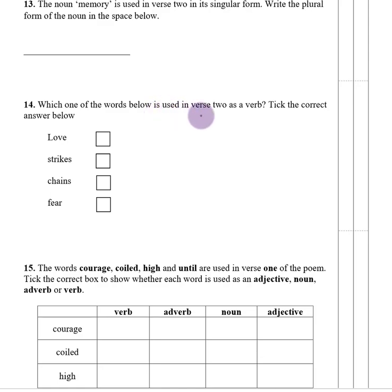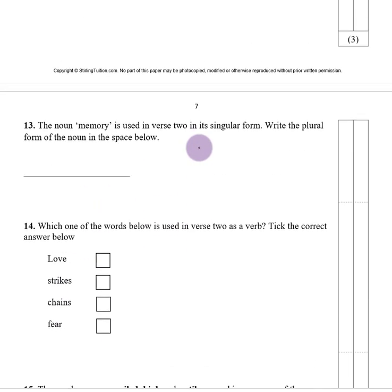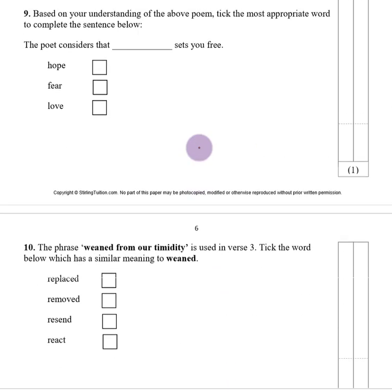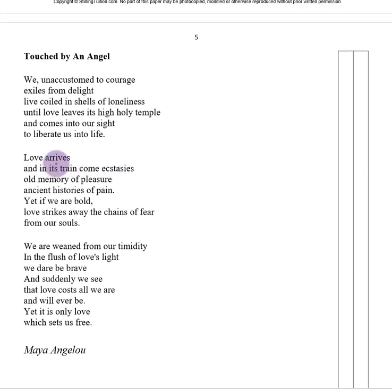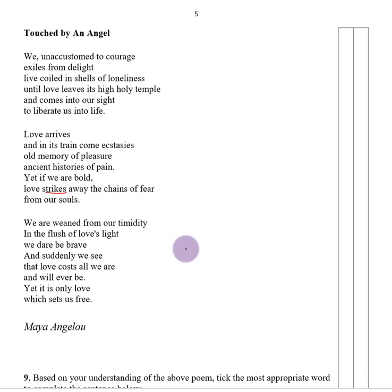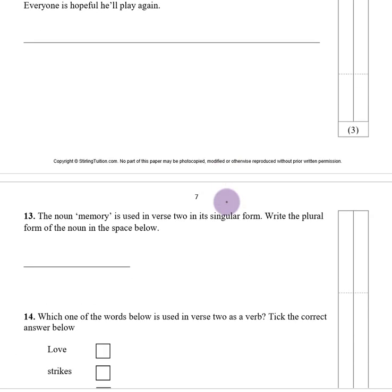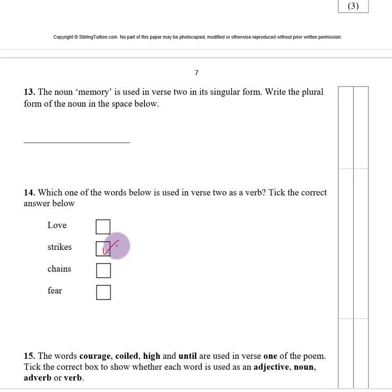Number fourteen. Which word is used in verse two as a verb? The options are love, strikes, chains, and fear. Looking at verse two: 'Love arrives' — love there is a noun. 'Love strikes away the chains of fear.' Strikes is the verb — it is the doing word, something that happens. Chains is a noun — a thing. And fear in this instance is also a noun.